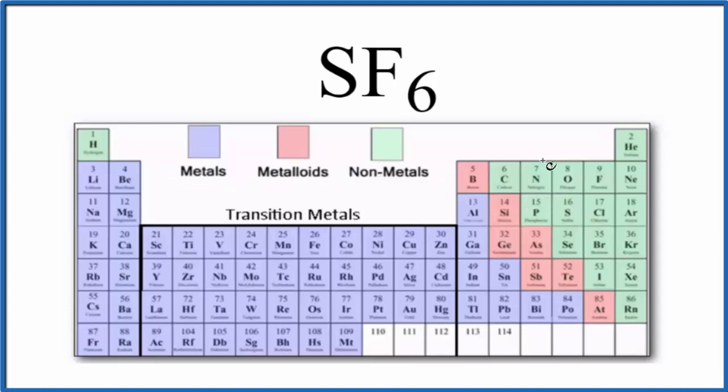Let's find sulfur here, right here is sulfur, that's a nonmetal, and then fluorine right here, that's also a nonmetal. When we have two nonmetals, that means we have a covalent or molecular compound. So SF6 is a covalent compound.